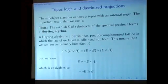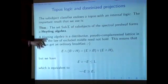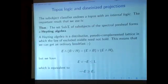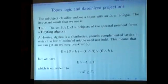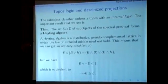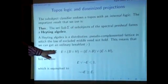The Heyting algebra, which I also mentioned today already, is a distributive pseudo-complemented lattice in which the law of excluded middle need not hold. I'm trying to make this clear here. First of all, this means we can get a normal breakfast, which is a good thing.